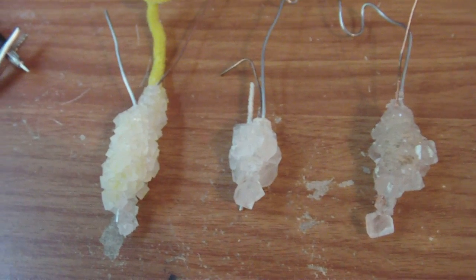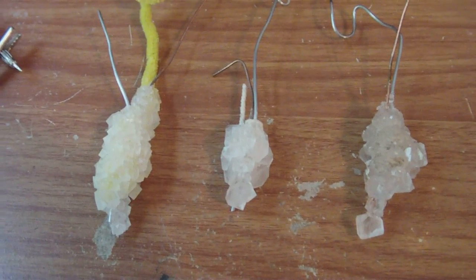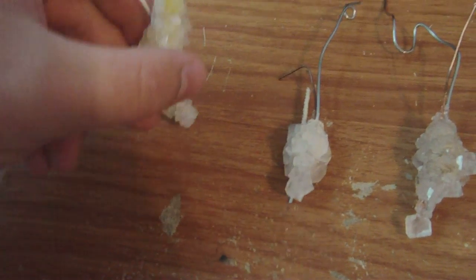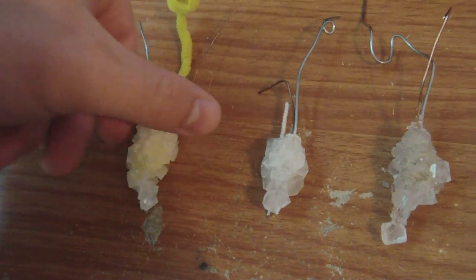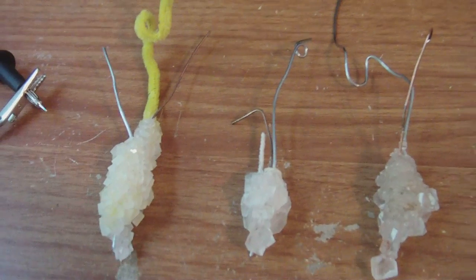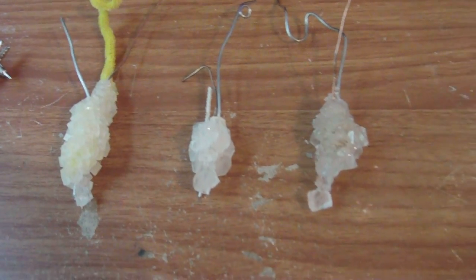All right guys, here's all three of my literal crystal batteries. As you can see they are literally crystal batteries. The electrodes are copper and aluminum.